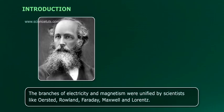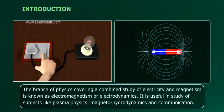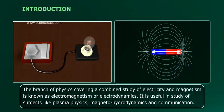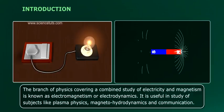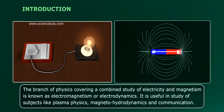Maxwell and Lorentz. The branch of physics covering a combined study of electricity and magnetism is known as electromagnetism or electrodynamics.